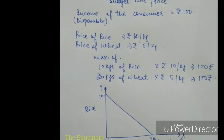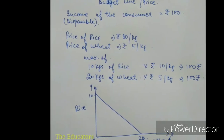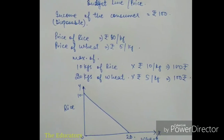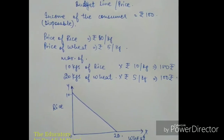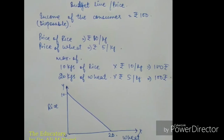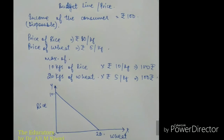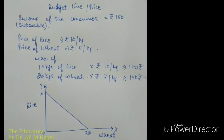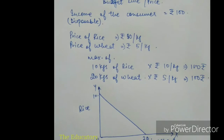The budget line — another name for it is the price line. It is an imaginary line that gives the consumer the option to purchase different commodities within the budget. For example, if we have a disposable personal income (DPI) of 100 rupees and two commodities — rice at 10 rupees per kg and wheat at 5 rupees per kg.